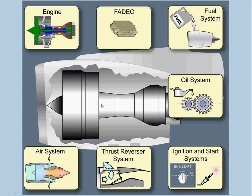As you can see on this diagram, this is what we will discuss through the three videos: engine, FADEC, fuel system, oil system, ignition, thrust reversers, and the pneumatics or air system.